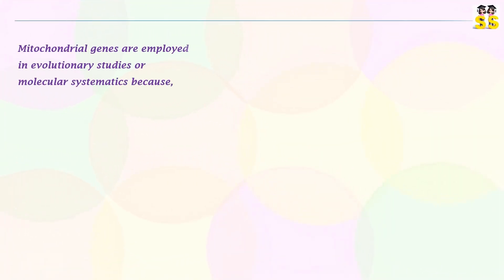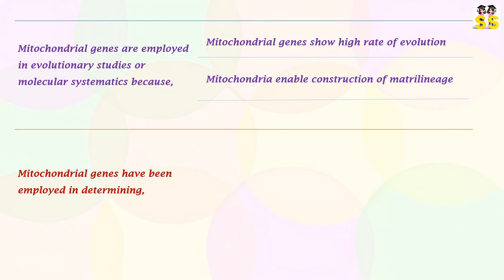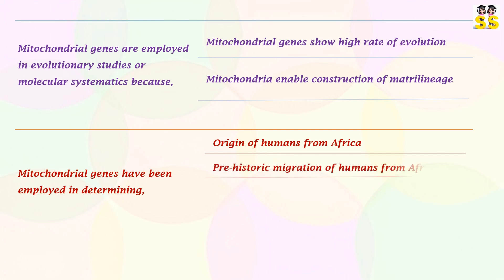Mitochondrial genes are employed in tracing genetic lineages or molecular systematics because mitochondrial genes show a high rate of evolution and mitochondria enable construction of matrilineal lineage. They are used in determining the origin of humans from Africa, prehistoric migration of humans from Africa, and the sequence of primate evolution from chimpanzee to new-world monkeys.